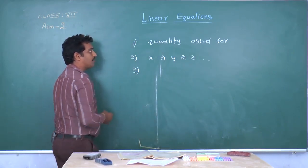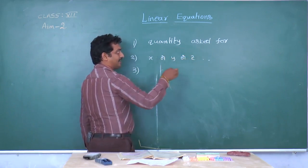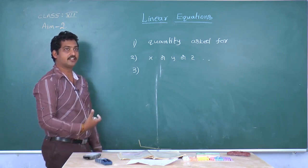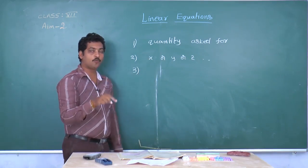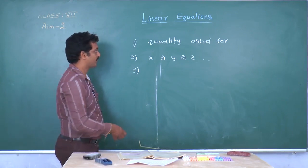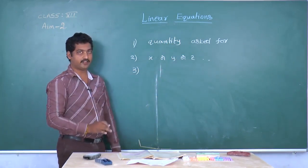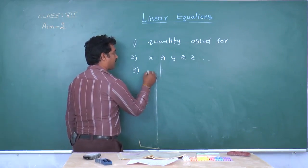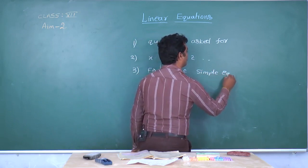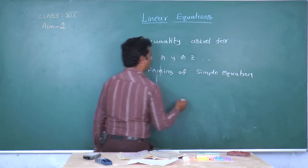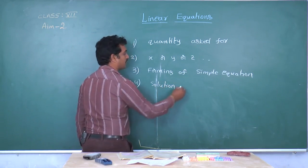The third step is: using the given data in the problem, establish the relation between unknowns — that means variables — and known points in the given problem. Then we will get a simple linear equation in one variable. This forming of a simple equation is the third step. The fourth step is solving the simple equation.